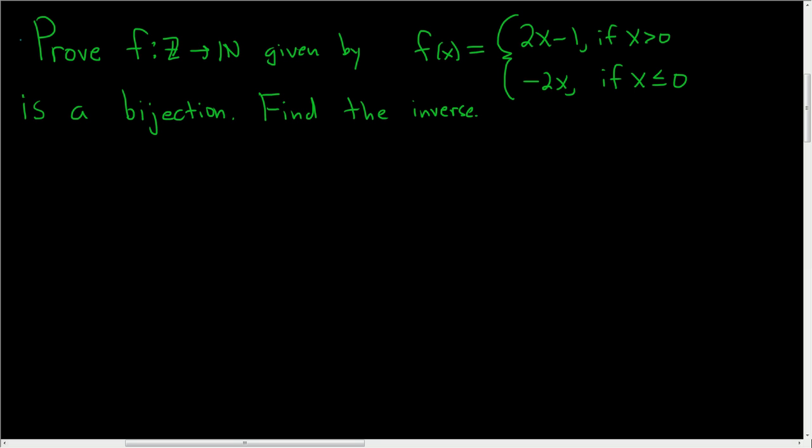We're asked to prove that this piecewise function is a bijection, and we're also asked to find the inverse. To show it's a bijection, we have to show that it's 1-to-1 and onto.